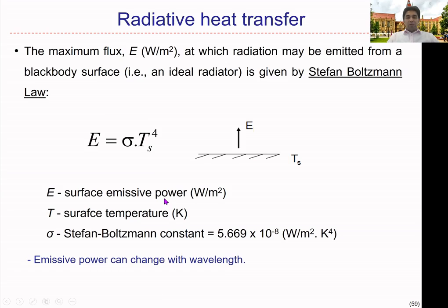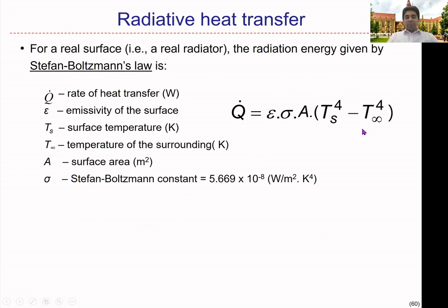Let's see how we can get a modified format of the Stefan-Boltzmann law to calculate radiative heat transfer. This is the form we are going to use in heat transfer calculations. You can see q-dot here — the rate of heat transfer in watts. For a real surface, we call an ideal radiator; the radiation energy can be given by the Stefan-Boltzmann law. Let's consider there's a heat source in the atmosphere releasing heat to the surrounding based on radiation. We can model that heat transfer behavior using that equation. We'll try to identify the terms — q-dot is the same term we discussed before for conduction and convection.